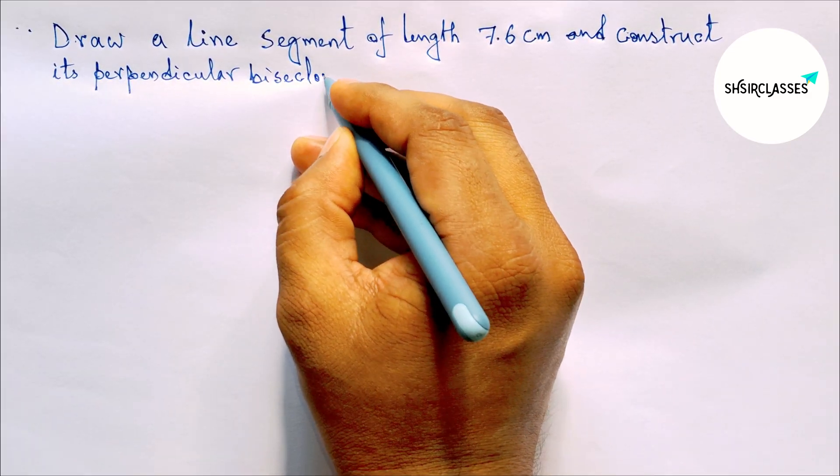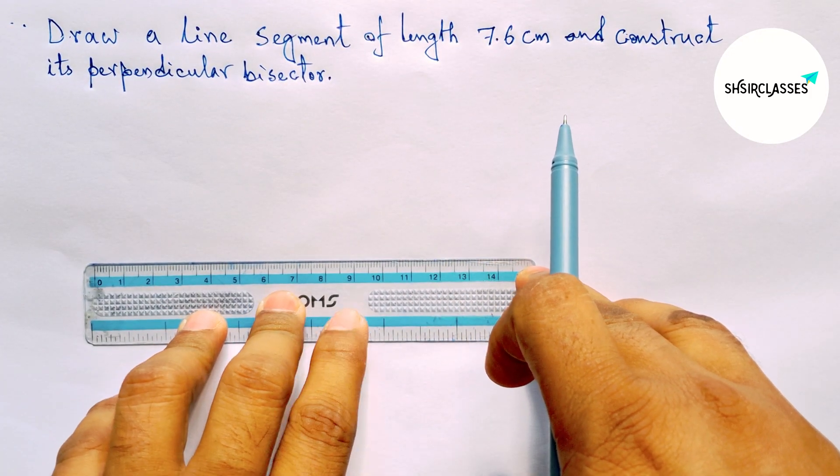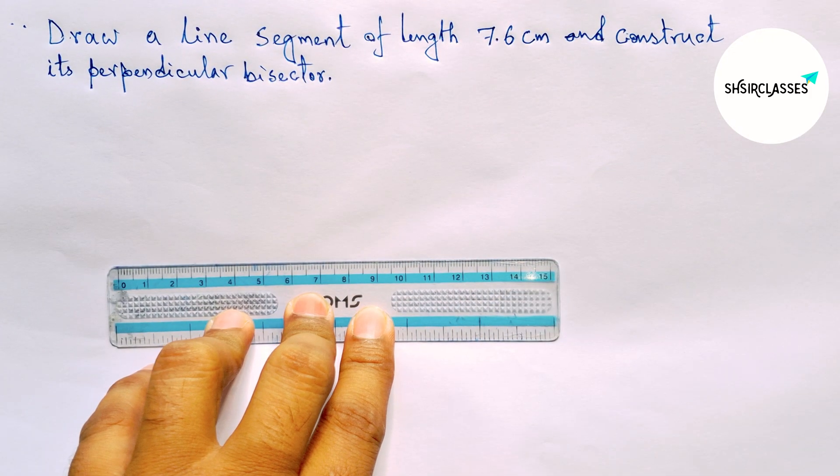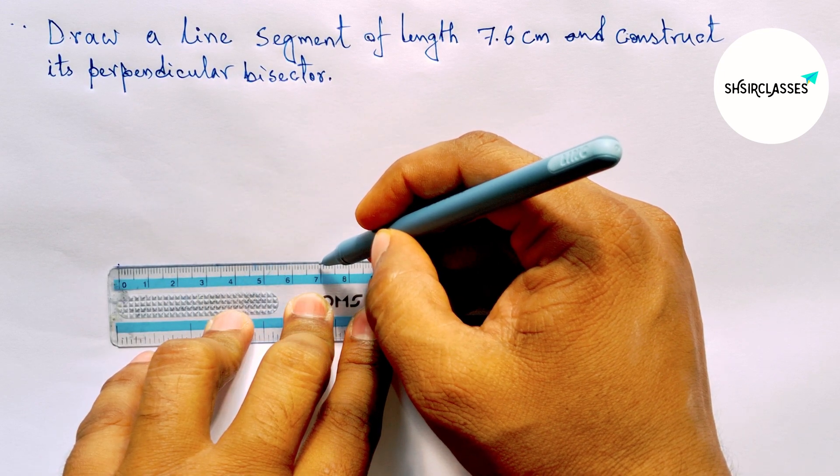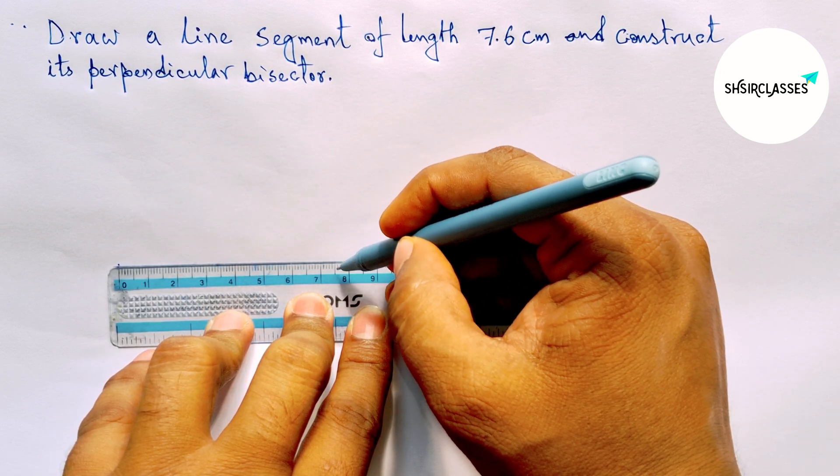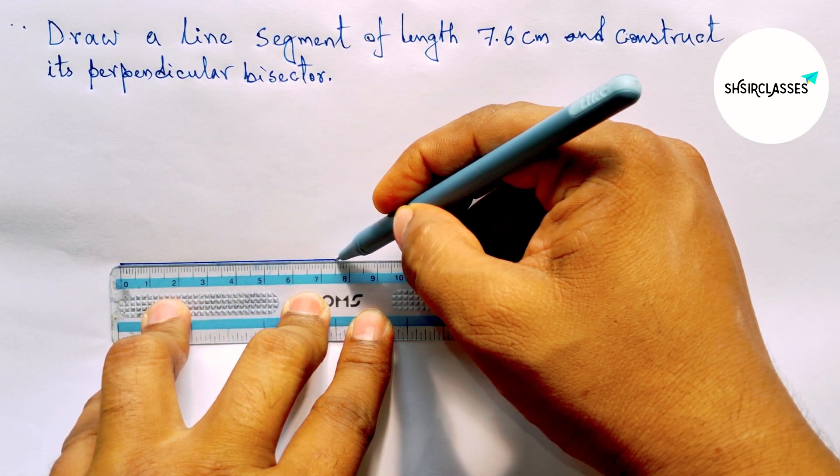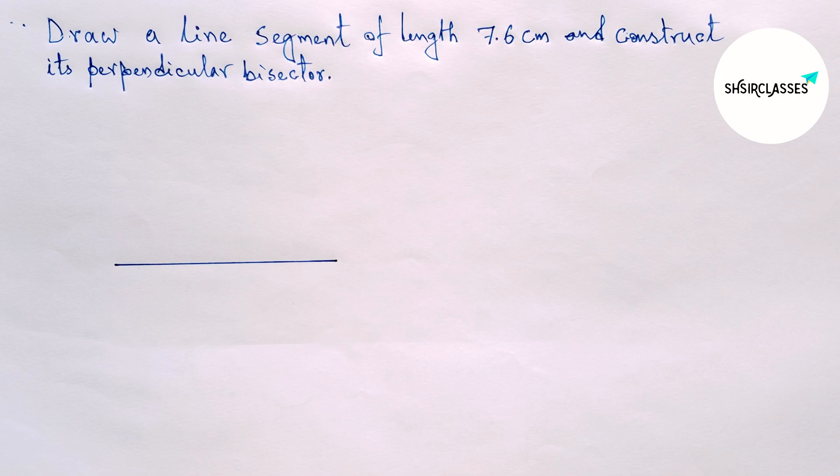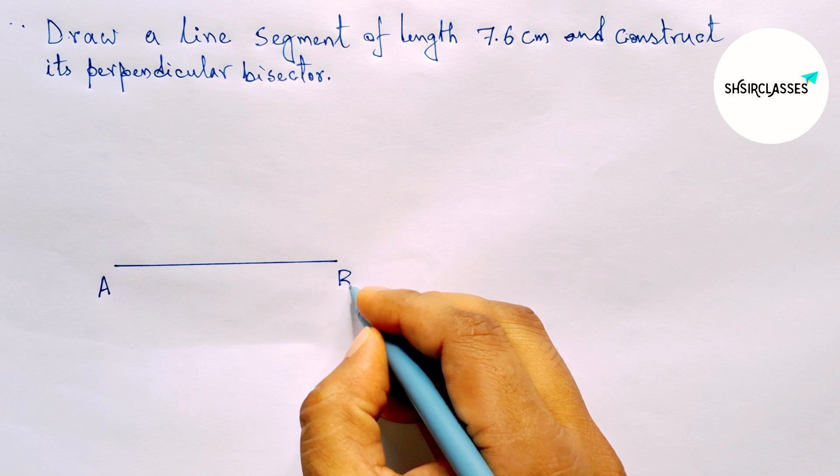Let's start. First, let us draw a line segment of length 7.6 centimeters. Here is 7, this is 7.5, and counting 1 more gives 7.6 centimeters. This is our 7.6 centimeter line segment. Now label the endpoints A and B.